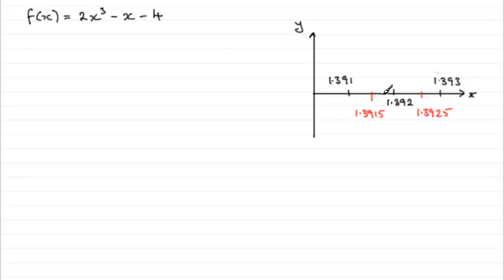So I'm expecting the graph of f of x to cross somewhere in this interval, to cross the x-axis. So it's going to go from say a minus quantity to a positive quantity or a positive quantity to a minus quantity.